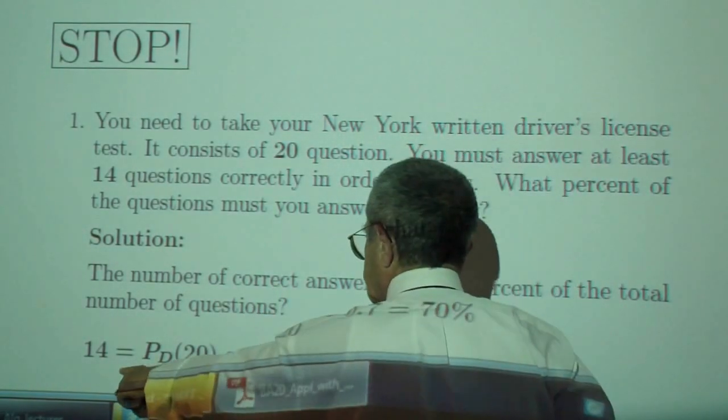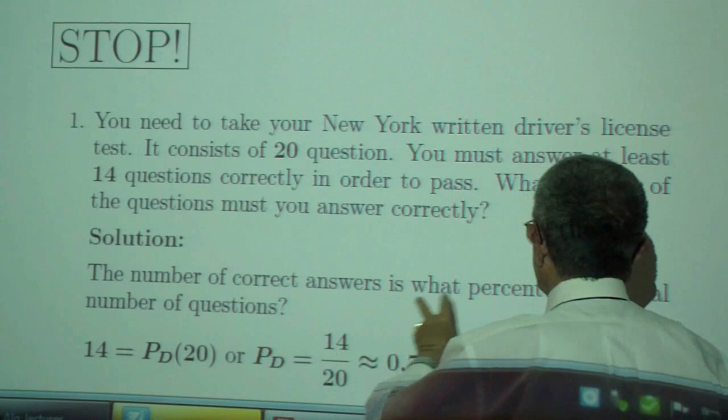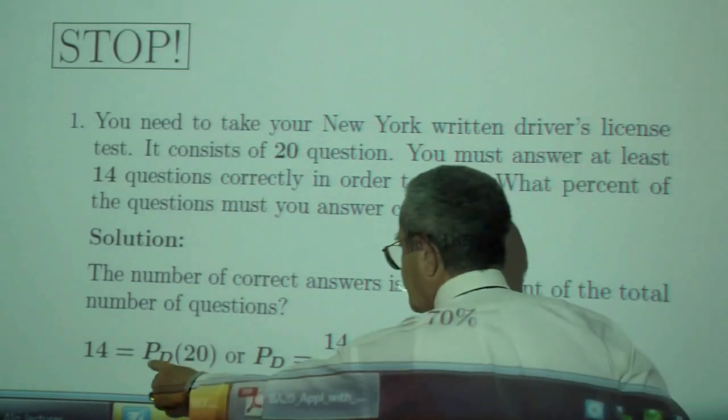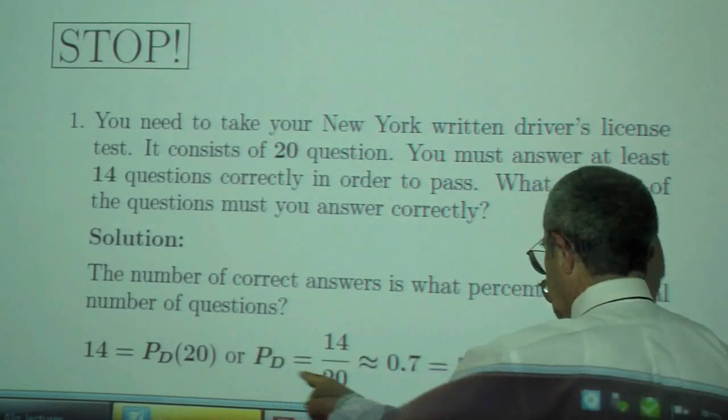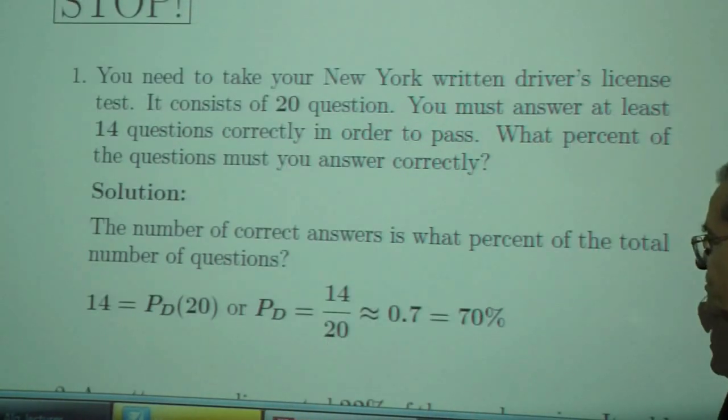The number of correct answers, which is 14, is what percent of the total number of questions, which is 20. Divide 14 by 20, you get about 70%.